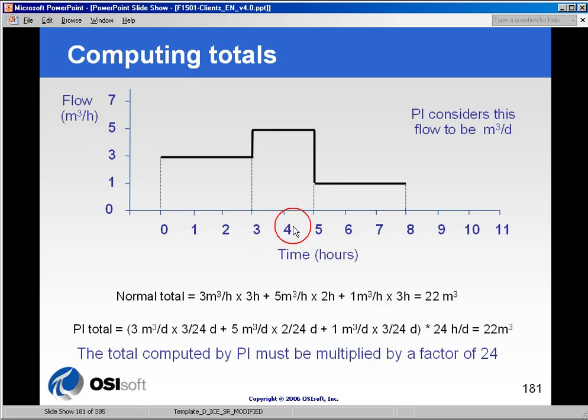Over the next two hours, we produce product at five cubic meters per hour. That's another 10 cubic meters. And then, over the last three hours, we produce one cubic meter per hour. That's three more. So, if when you add it all up in a normal totalization, you get 22 cubic meters.